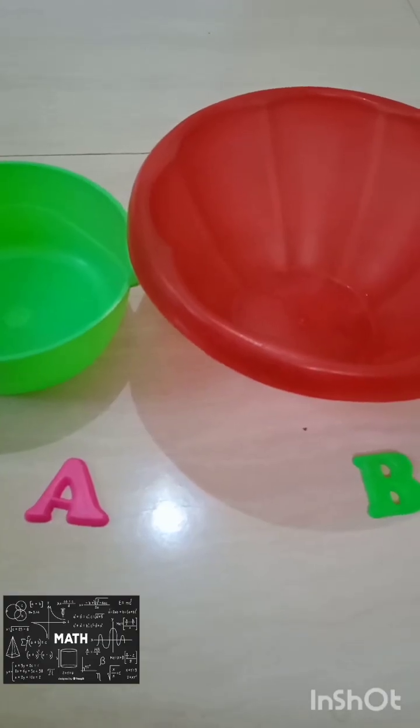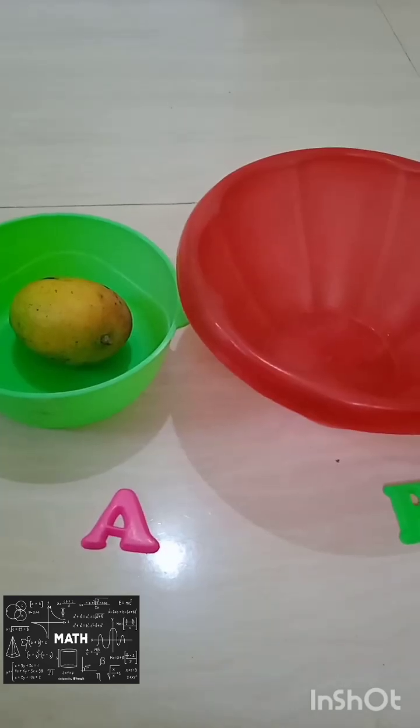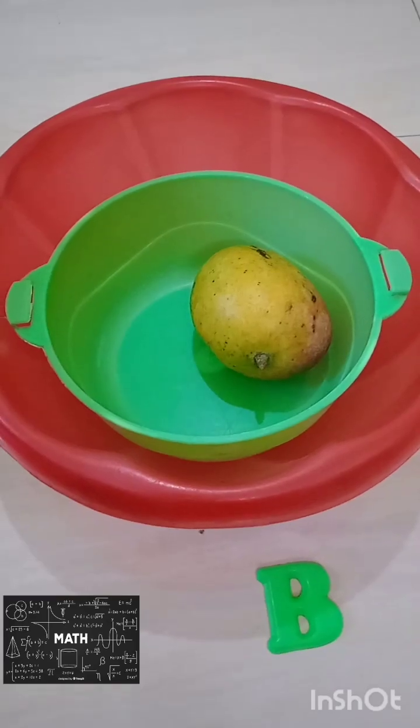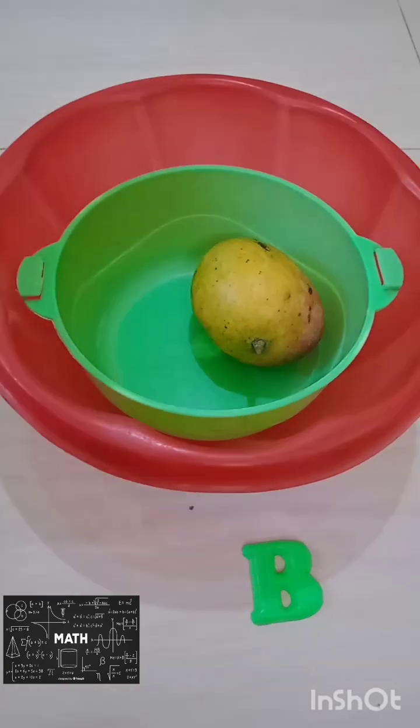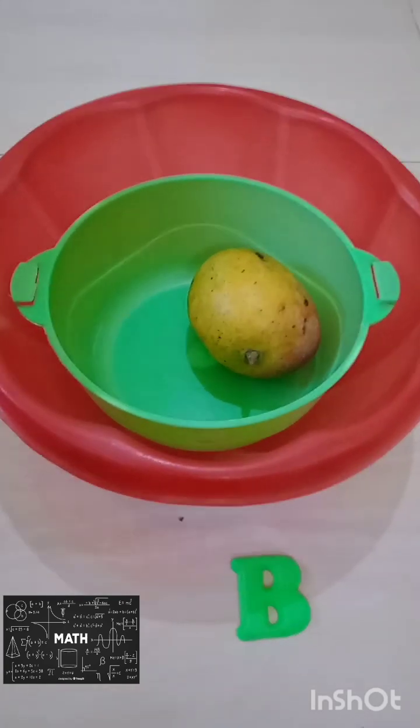Subset. A and B are sets. Mango is an element of A. Here set A is inside B. A is a subset of B. Thank you.